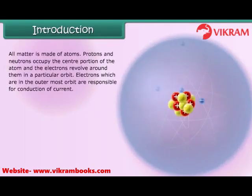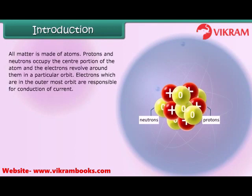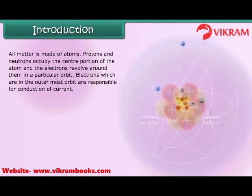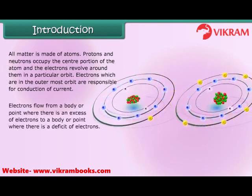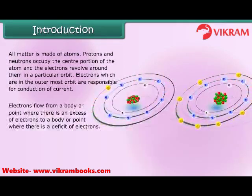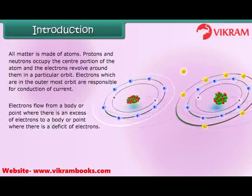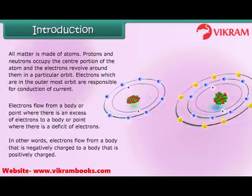All matter is made of atoms. Protons and neutrons occupy the center portion of the atom and the electrons revolve around them in a particular orbit. Electrons which are in the outermost orbit are responsible for conduction of current. Electrons flow from a body where there is an excess of electrons to a body where there is a deficit — in other words, from a negatively charged body to a positively charged body.